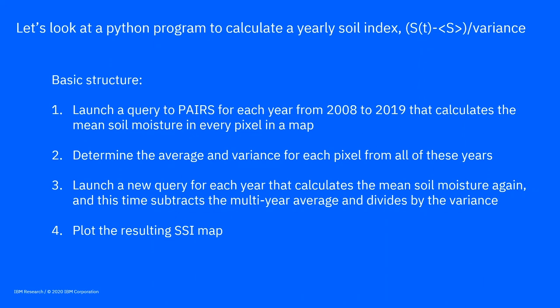Let's look at a Python program to calculate a yearly soil index — the soil moisture. I want to go back through 2008 to 2019, 12 years. For each year I want the mean soil moisture down to seven centimeters, in every pixel in a map. Then I want to determine the average for all years and the variance around that average, then launch a new query for each year that calculates the mean soil moisture again, subtract the average and divide by the variance to see if soil moisture is more or less than average for that year in proportion to the variance — how big are the fluctuations. I showed you results from this process before when we talked about drought in Kenya.